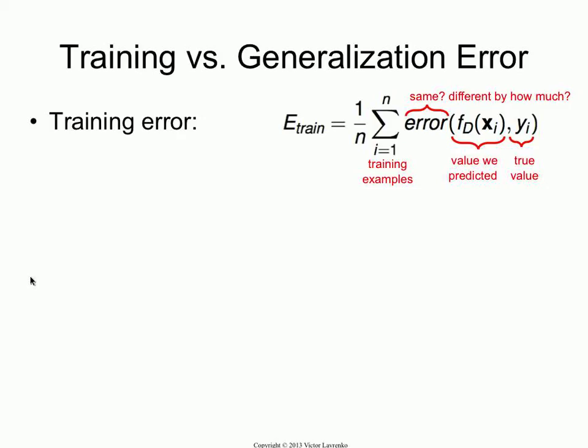Training examples are pairs, XI and YI — so an email and the class that's supposed to go with it. And what you're summing up is this error function, and this error function basically looks at two arguments: this is the true value for XI, this is what our label says, and this is what we predicted — what our classifier or regressor predicts for this XI. So error is some measure of whether they are the same or not, and if they're not the same, how far off they are.